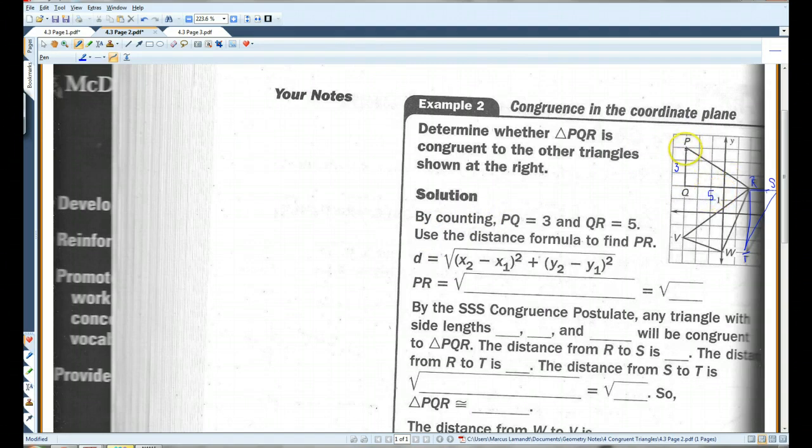So, I'm going to use the distance formula to find PR. So, this is negative 3, 1, 2, 3, 4, 5. And this is 2, 2. So, this is going to be 2 minus negative 3 squared plus 2 minus 5 squared.